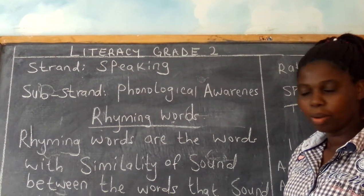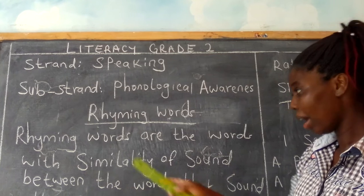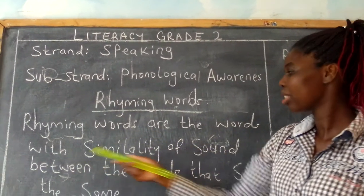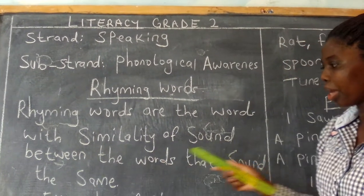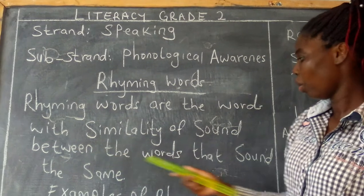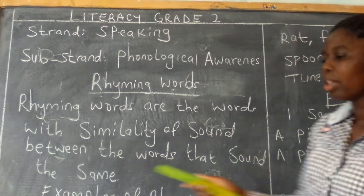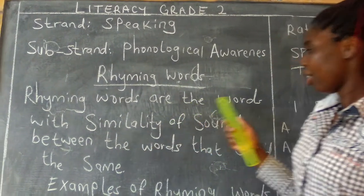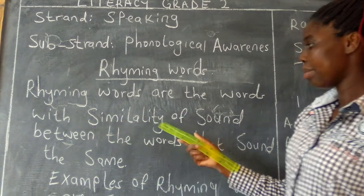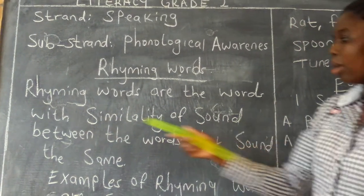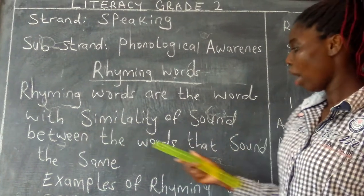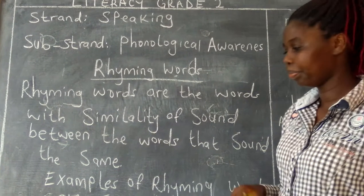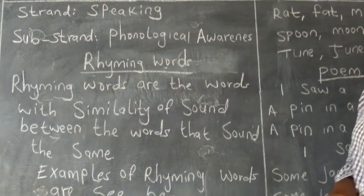What are rhyming words? Rhyming words are the ones with similarity of sound — the ones that sound the same. Examples of rhyming words are: